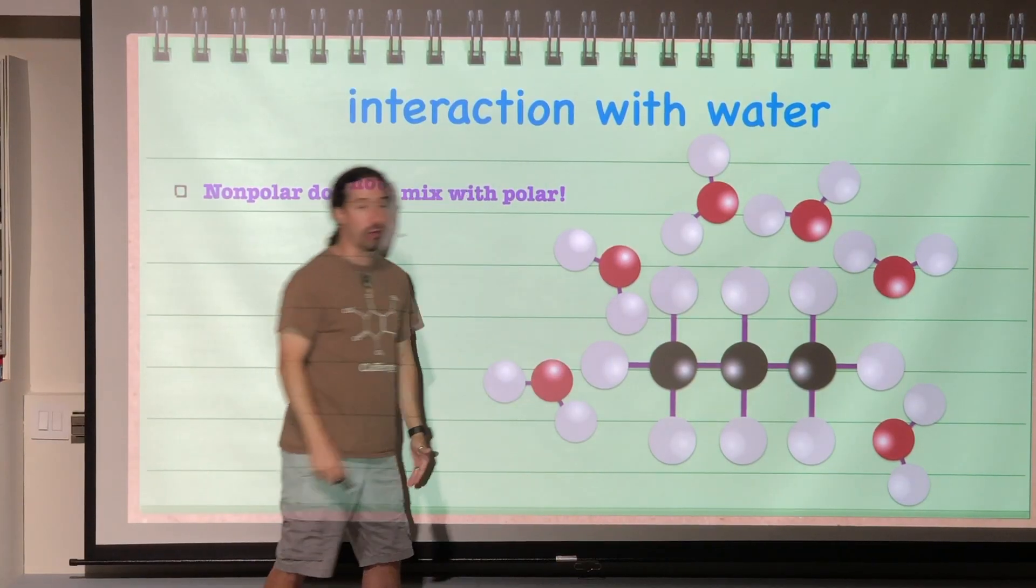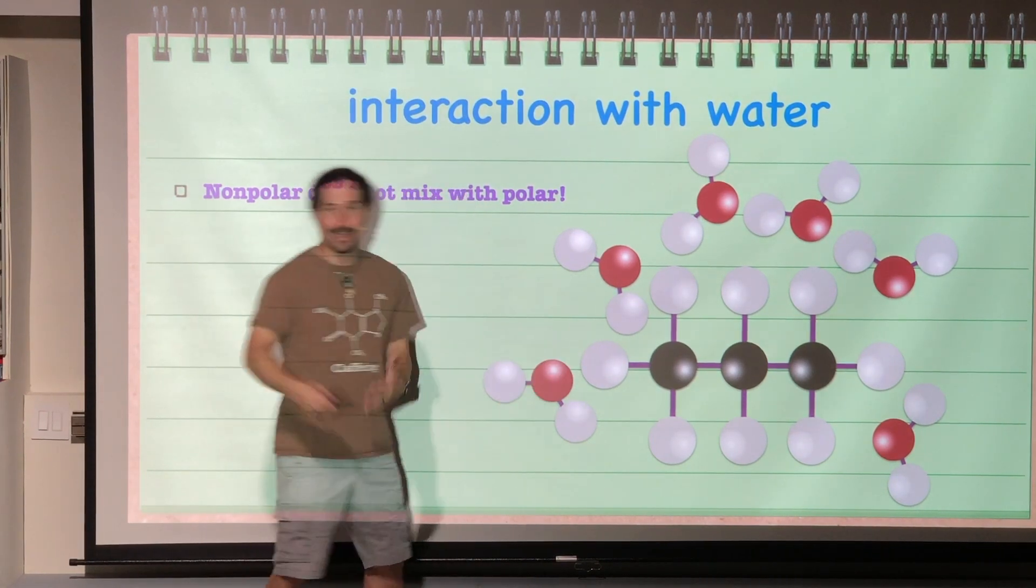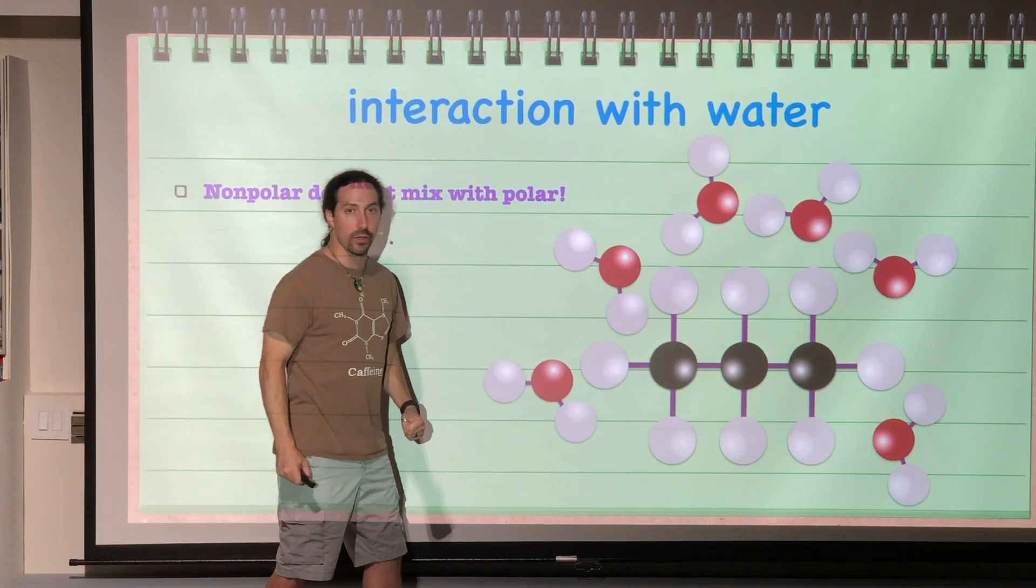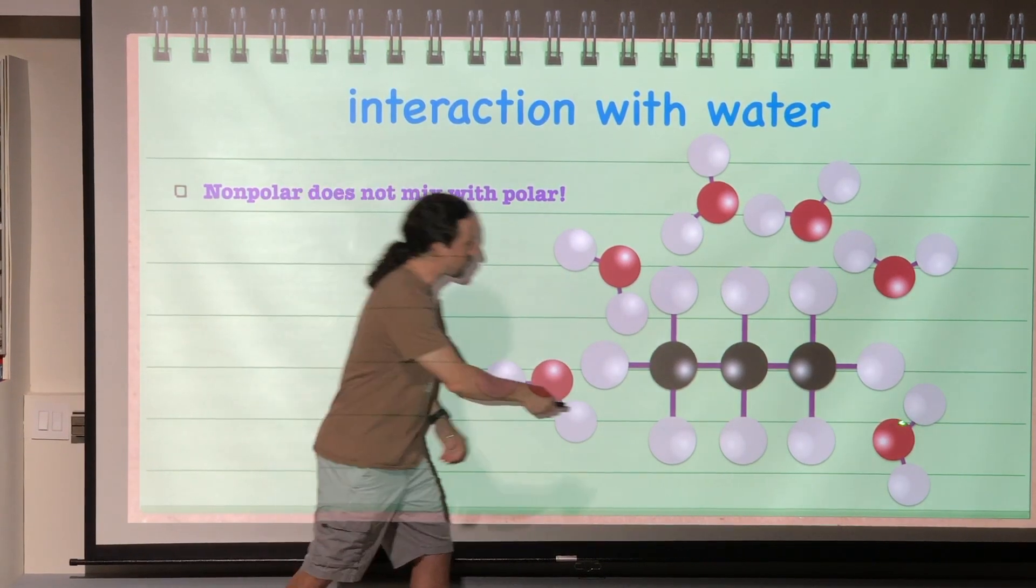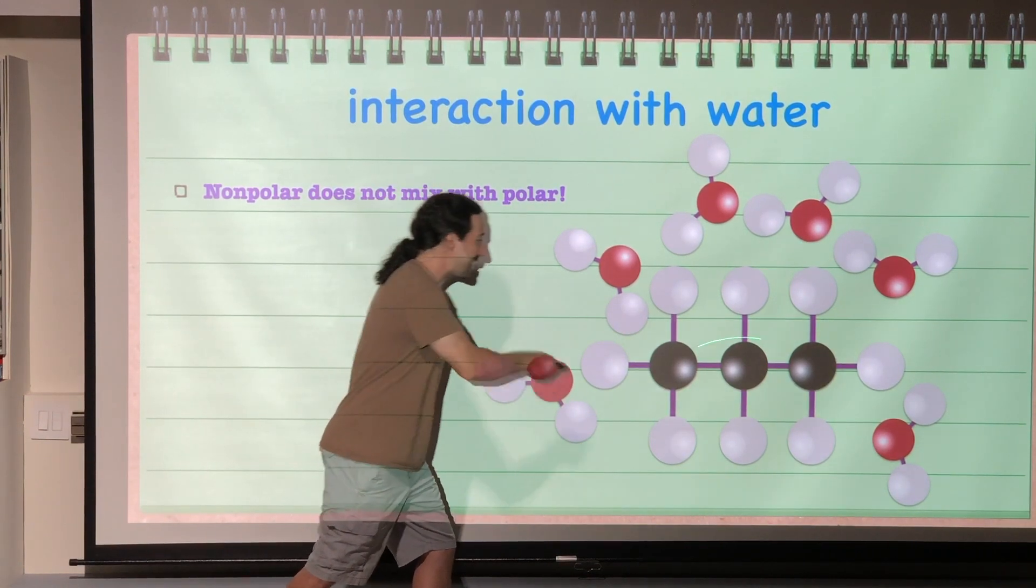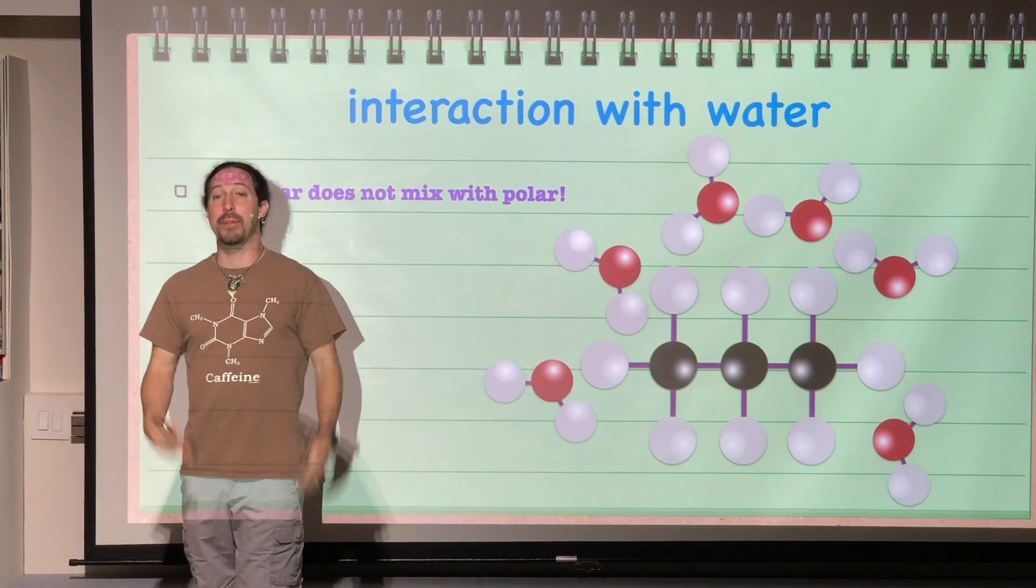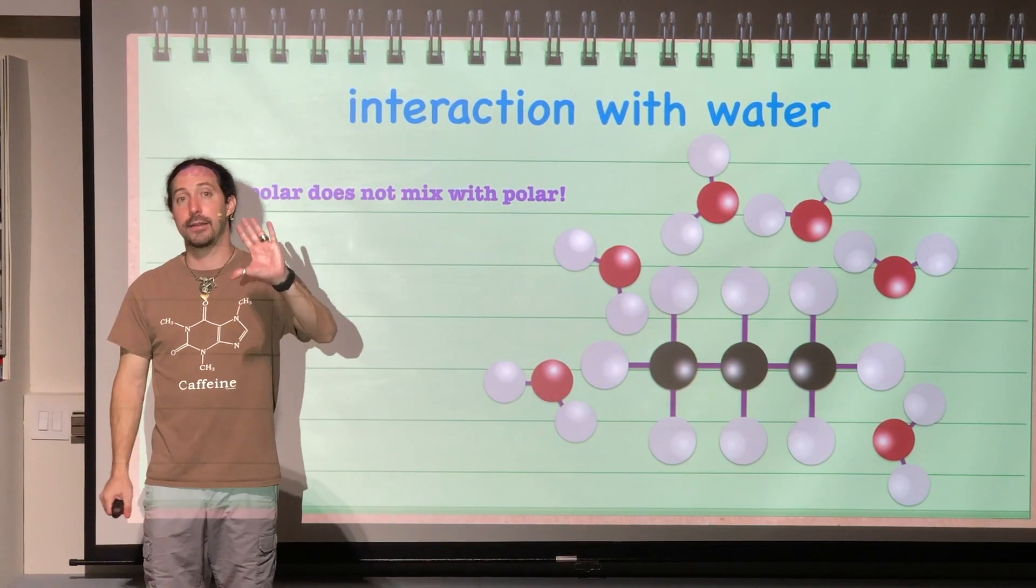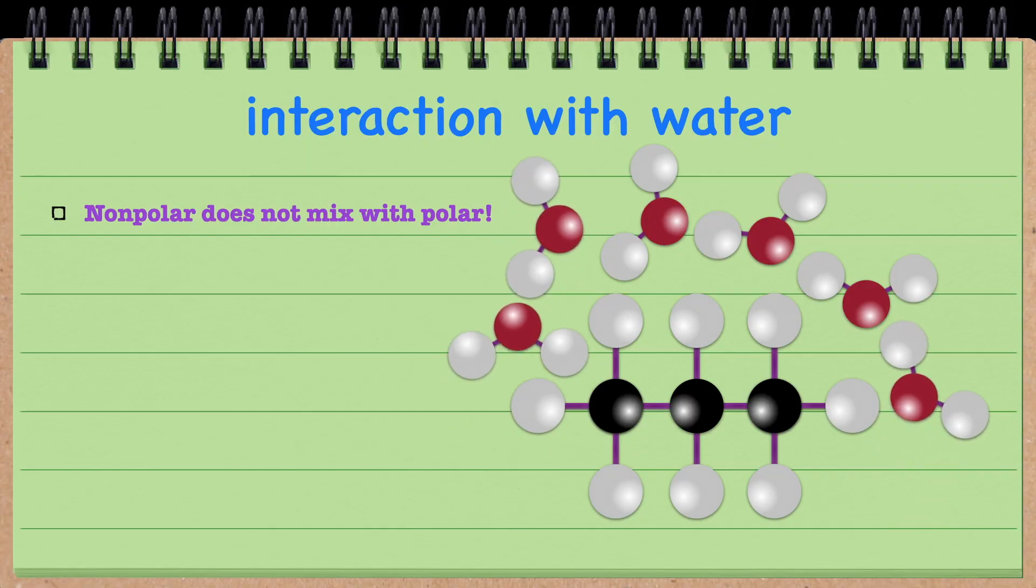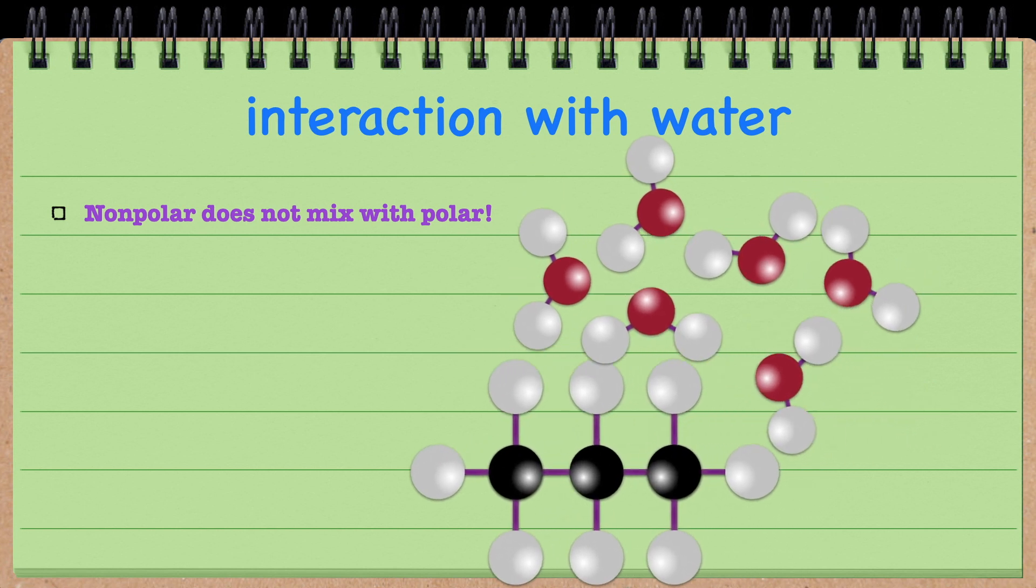And so that means that this water molecule, it's not that it is repelled by this propane molecule, it's that that propane molecule is just sort of in its way of being attracted to this other water molecule. This water molecule is attracted to the other water molecules. It is not attracted or repelled by that propane molecule, it's just the propane molecule is in the way.